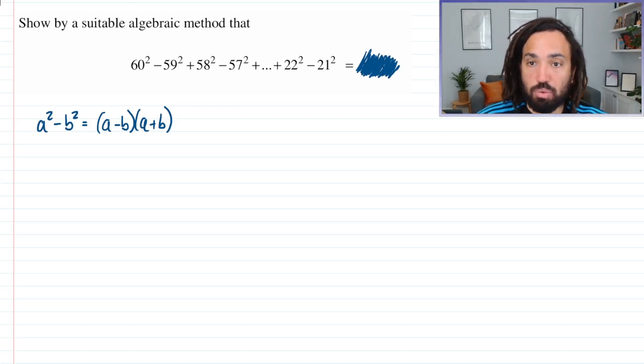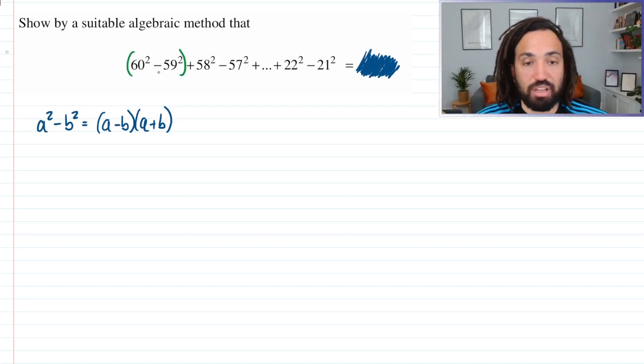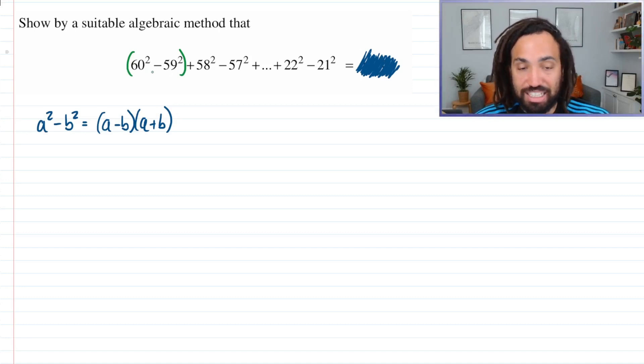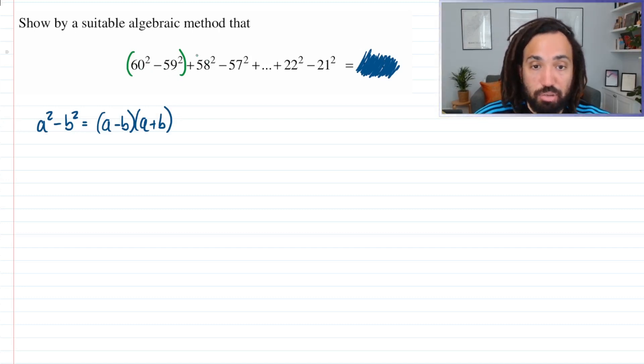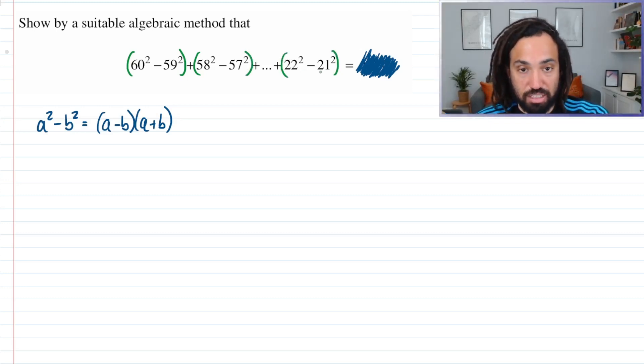So why is that useful here? Well, as you can see, if I bracket these two and just focus in on them, that is a difference of two squares because there's a subtraction sign in between them and both of them are square numbers. So we can put brackets around each of these and we can consider them as pairs.